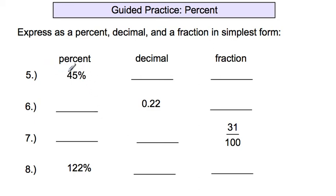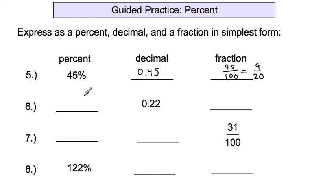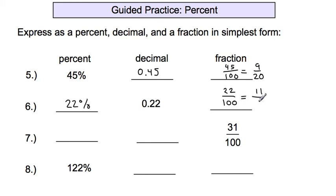Now some practice going from percent to decimal to fractions. Number 5: 45 percent means 45 out of 100, so as a decimal it's 0.45. As a fraction it's 45 over 100, and the greatest common factor is 5, so that equals 9 over 20. Number 6: the decimal 0.22 means 22 hundredths. As a fraction it's 22 over 100, and as a percent it's 22 percent. The greatest common factor is 2, so that simplifies to 11 over 50.